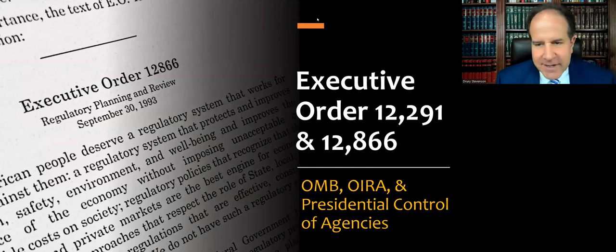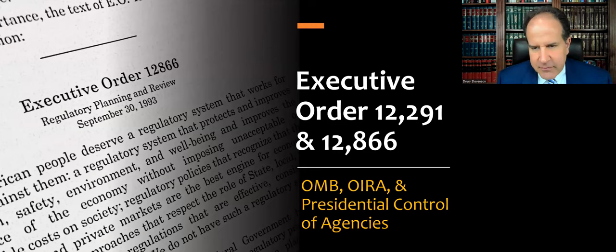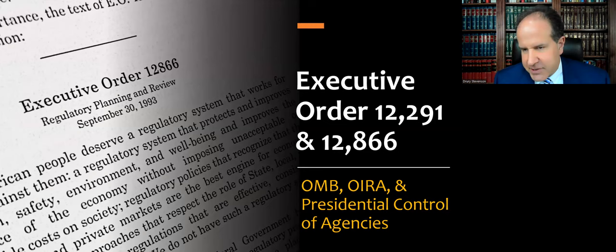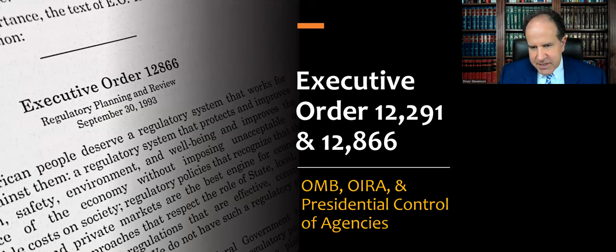I'm Drew Stevenson, and this is a lecture about executive orders from the president, which are part of the way the president can control regulatory agencies in the federal government. Here we're talking about mostly two specific executive orders: 12-291 and 12-866. These are the two that are typically studied in an administrative law course or a statutory interpretation or legislation and regulation class in law school. They had a lot of impact on the structure and process of regulatory agencies and how agencies are allowed to make rules.